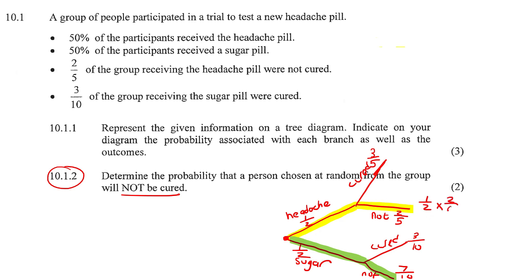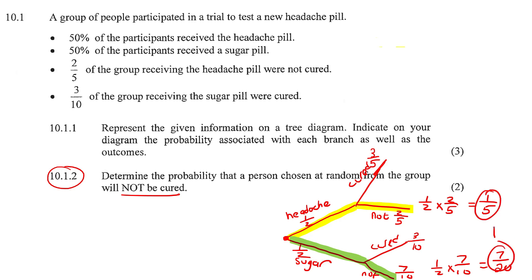1 over 2 multiplied by 2 over 5 gives you 1 over 5 after you simplify. Then the other pathway is 1 over 2 multiplied by 7 over 10, which gives us 7 over 20. What you then do with these two answers is add them together: 1 over 5 plus 7 over 20, and that gives 0.55 or 11 over 20.